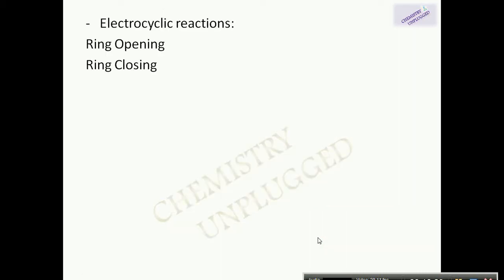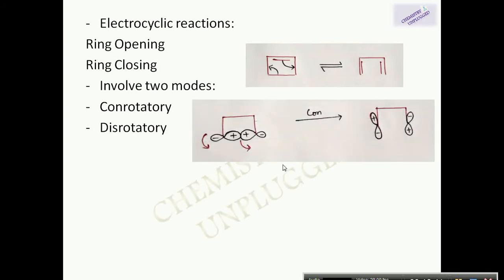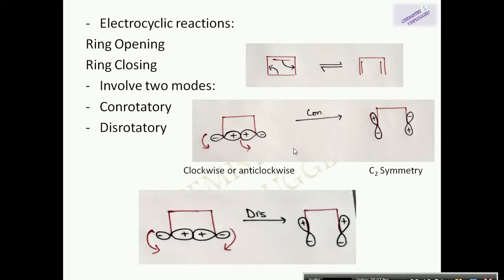Electrocyclic reactions are of two types: ring opening and ring closing. They involve two modes of rotation: conrotatory movement and disrotatory movement. Conrotatory means the two lobes of the molecular orbital rotate in the same direction — either both clockwise or both anti-clockwise. Disrotatory means one rotates clockwise while the other rotates anti-clockwise. In cyclobutene, conrotatory movement of the lobes leads to C2 symmetry, while disrotatory movement leads to mirror symmetry.